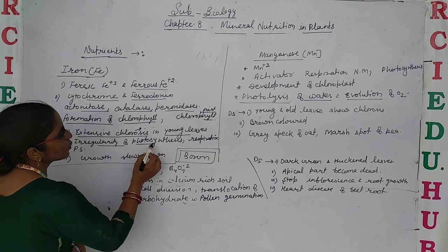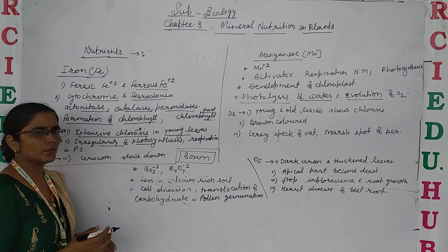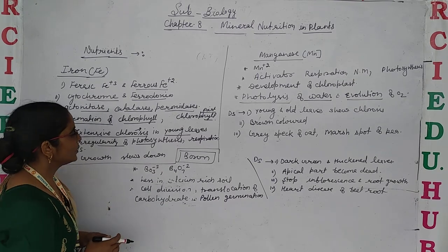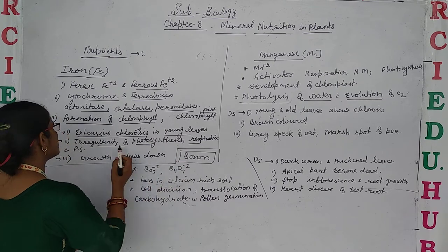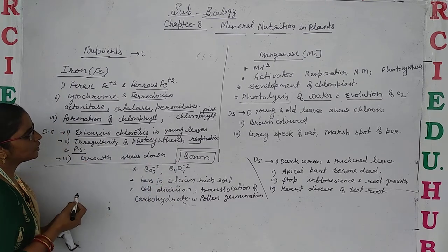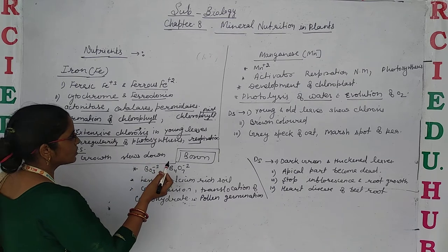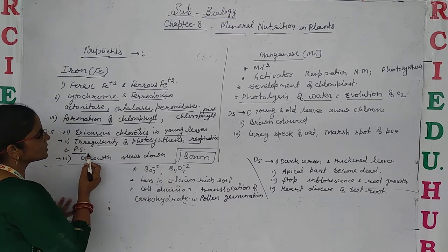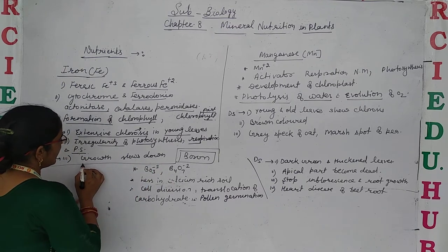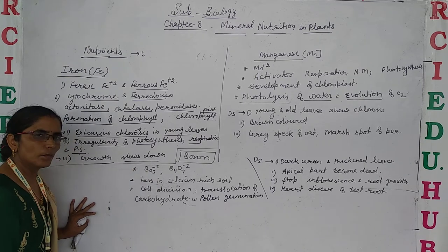Iron deficiency also causes irregularity of photosynthesis — it does not take place continuously. It directly or indirectly affects the rate of photosynthesis, respiration, and protein synthesis.